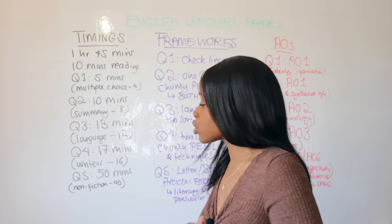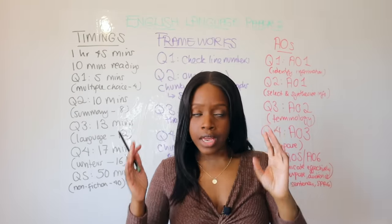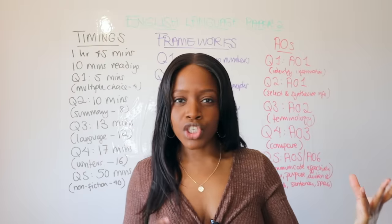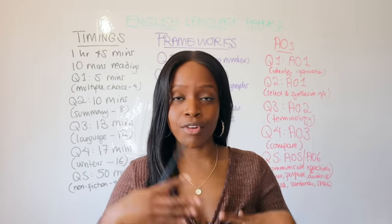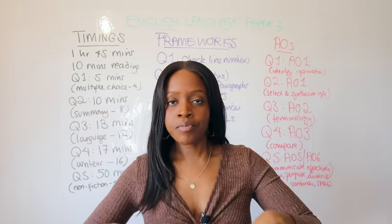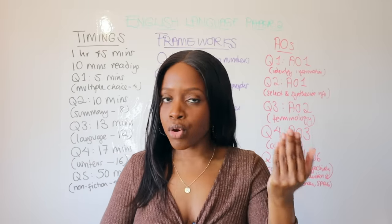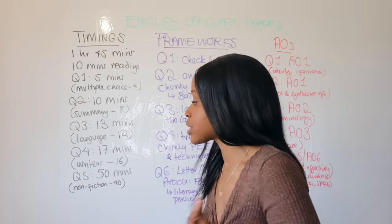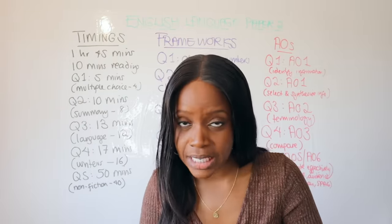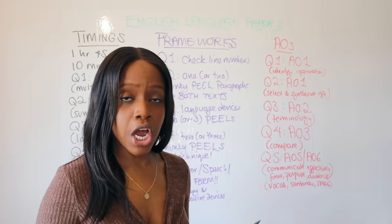Question Five is worth 40 marks — half of the overall paper. You're given a statement on a topical issue, such as whether social media is good or bad, and asked to what extent you agree. You write a letter, speech, or article presenting your perspective alongside counter-arguments. Spend 50 minutes on this question: the first 10 minutes planning your reasons and counter-arguments, then 35-40 minutes writing your response, and five minutes checking the paper for errors.